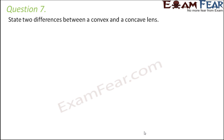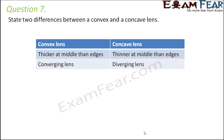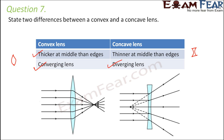Question number seven: State two differences between a convex and a concave lens. A convex lens is a converging lens because the rays of light appear to meet at a point after refraction. A concave lens is a diverging lens because the rays spread away from each other. Appearance-wise, a convex lens is thicker at the middle and thinner at the edges, whereas a concave lens is thicker at the edges than at the middle.